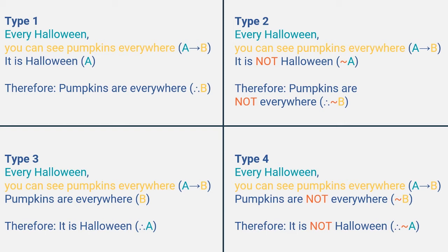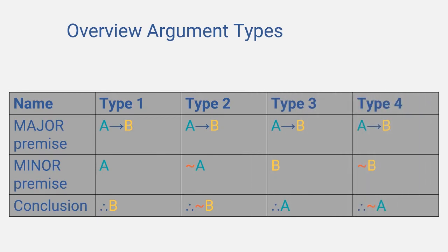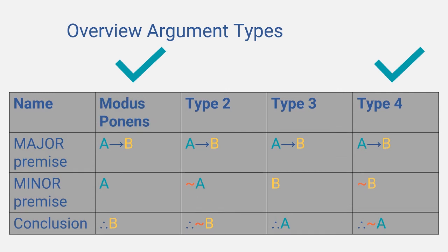Let's put all four of them in a schedule. Which ones of these arguments have valid forms? It is examples 1 and 4 — those have the correct forms and are always valid. The technical name for example 1 is modus ponens. You don't have to remember the name, but do remember that this is a valid argument. And example 4 is called modus tollens — logicians like using Latin.